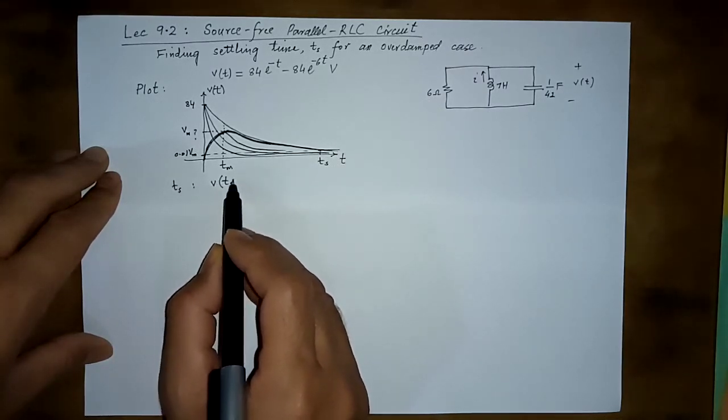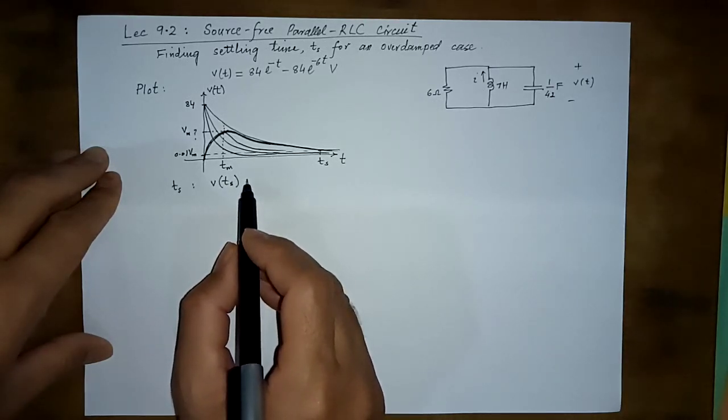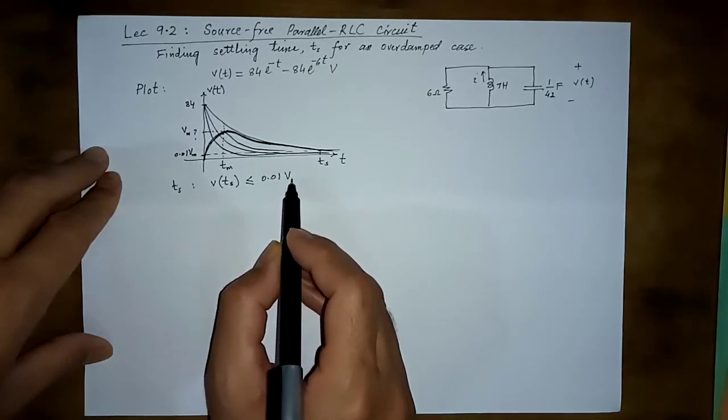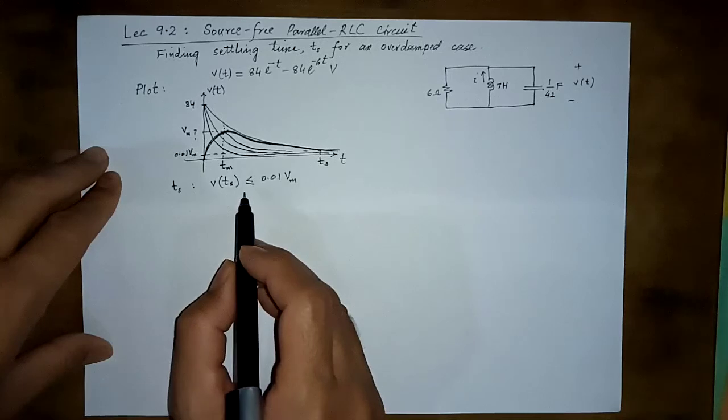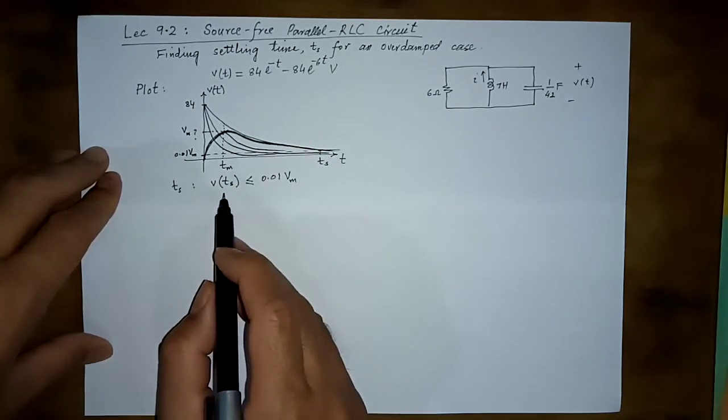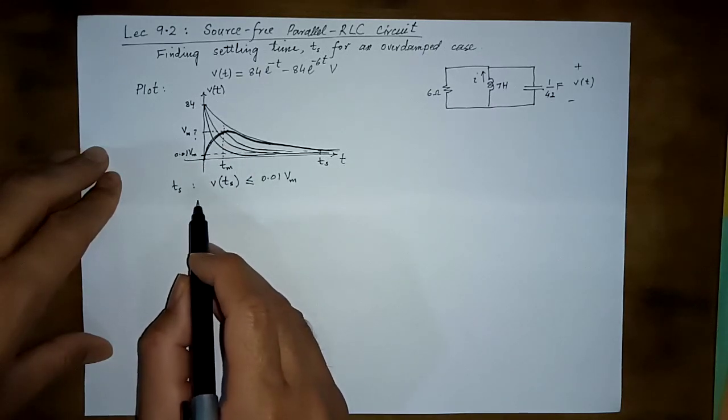Where vm is the max value. So if this is the expression, what will be the maxima? How to find the maximum value? You already know how to compute that.